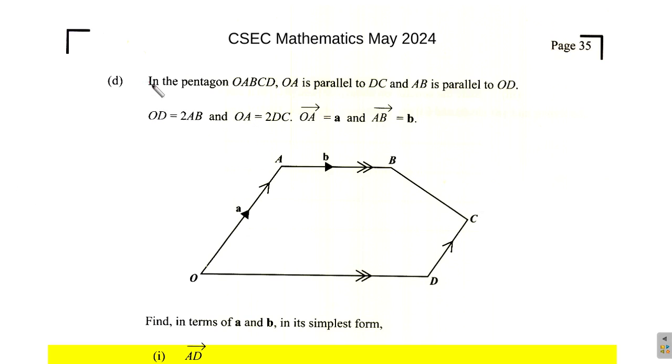It says in the pentagon OABCD, five sides, OA is parallel to DC. You can see from the arrows there, and AB is parallel to OD. So you can see from the arrows there, all the one arrows are parallel to each other, all the two arrows are parallel to each other.